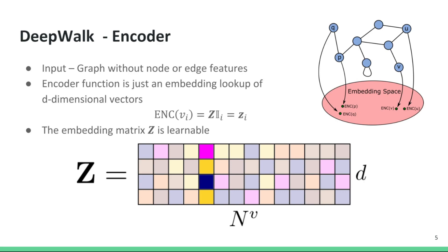Let's take a look at one node embedding algorithm called DeepWalk. The input to the encoder is a graph with no node or edge features. The embedding function is a lookup table z, with the width of z equal to the number of nodes and the height equal to the number of dimensions we would like the embedding to be. How this table works is very simple. Each node in the graph will have a number associated to it from 1 to nv. Say we are asked for the embedding of node 5 — we just pick the fifth column here — and that is the embedding of node 5. So what do we have to learn? We have to learn all the entries of this lookup table z.